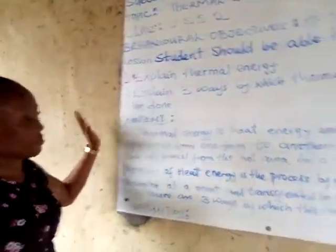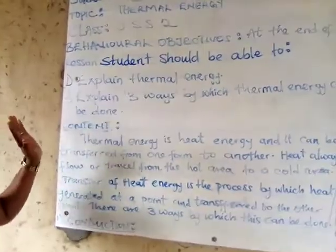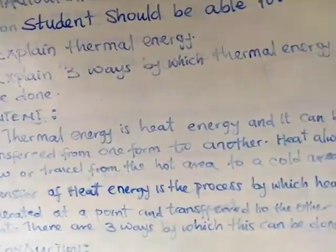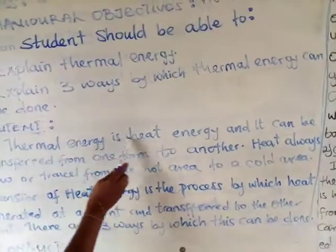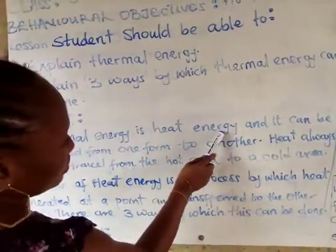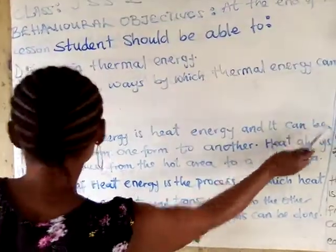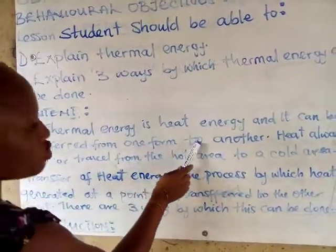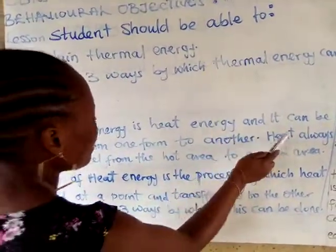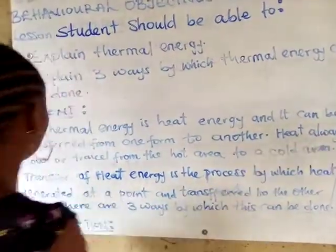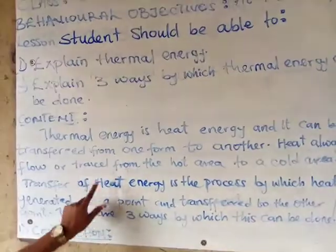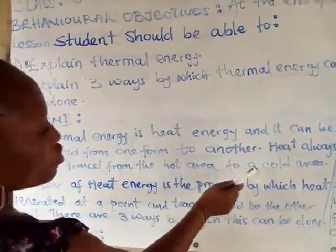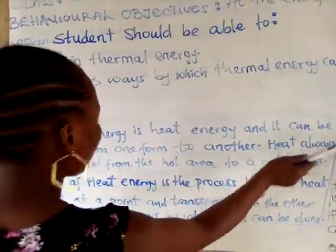Let's start with thermal energy. When we say thermal energy, thermal energy is heat energy and it can be transferred from one form to another. It always flows or travels from the hot area to a cold area.